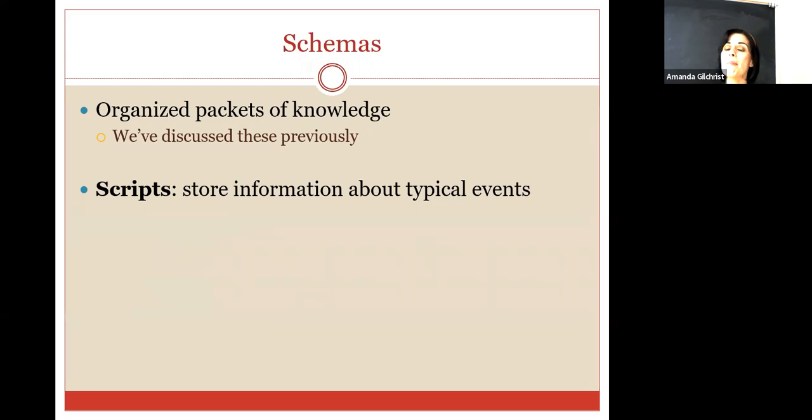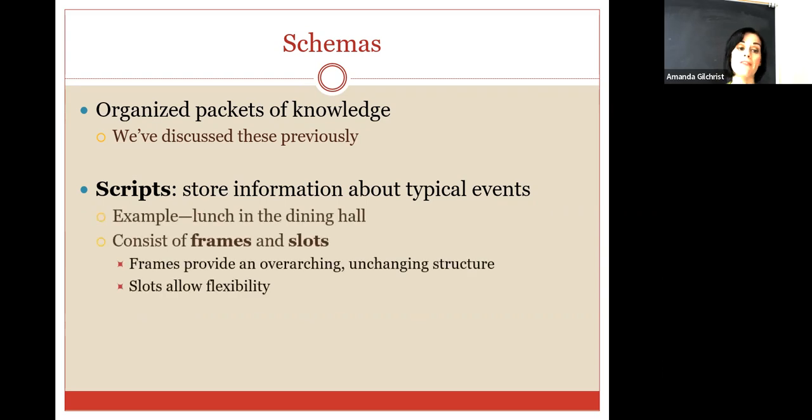You don't just go there to get popcorn and not watch the movie. You generally try not to get popcorn after the movie. You can, but most people don't. So a script is all about storing information about typical events. So an example is lunch in the dining hall, going to a movie, going on a date. There's typically a sequence of events. Some of you are like, a date? What is date? I forget. I'm old. Back in my day, we used to go on dates. Okay. Now we all just hang out with friends. We did that in high school, too.